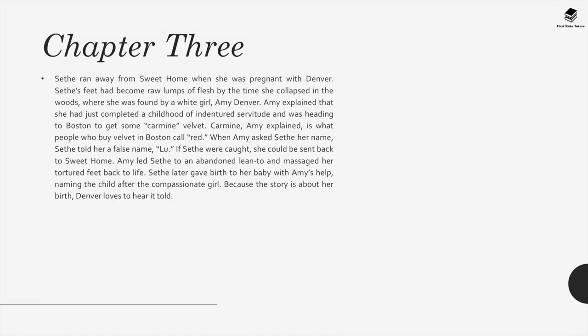Sethe ran away from Sweet Home when she was pregnant with Denver. Her feet had become raw lumps of flesh by the time she collapsed in the woods, where she was found by a white girl, Amy Denver. Amy explained she had just completed a childhood of indentured servitude and was heading to Boston to get some carmine velvet. When Amy asked Sethe her name, Sethe told her a false name, Lou, to avoid being sent back to Sweet Home. Amy led Sethe to an abandoned lean-to and massaged her tortured feet back to life. Sethe later gave birth to her baby with Amy's help, naming the child after the compassionate girl.